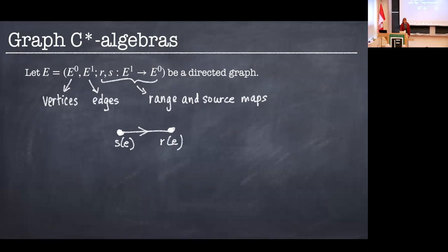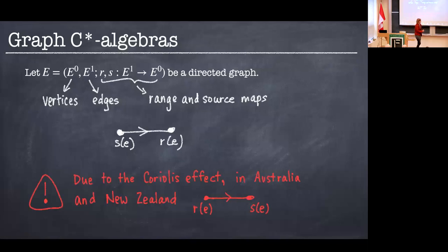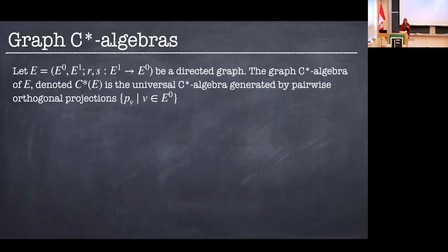And just a little thing you should be aware of that in the literature, particularly those researchers in Australia and New Zealand, they tend to switch the range in the source. I assume this is the Coriolis effect. And unfortunately, I am using this convention, but the main book that you will find on graphs C-Star Algebras, which is great, actually does it the opposite way. So just to be careful there.